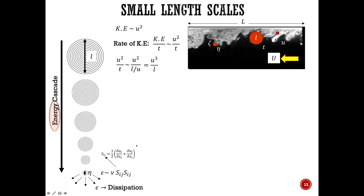This equation comes from the simple stress-strain relationship: fluid stress is proportional to the velocity gradients, and to remove the proportionality you include the dynamic viscosity. In some cases you have rho factored out, which makes it the kinematic viscosity. So dissipation is proportional to kinematic viscosity times the shear strain tensor.